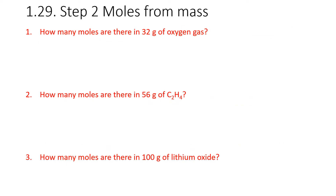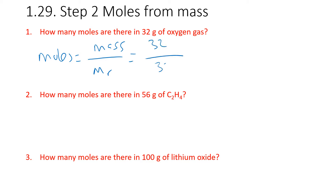Okay, so for step 2, we're calculating the number of moles from the mass given in the question. Pause the video and have a try at these three. For question 1, how many moles are there in 32 grams of oxygen gas? Moles equals mass over MR. Our mass is 32, our MR is also 32 because oxygen is 16 and there are two of them in oxygen gas, which gives us 1 mole.